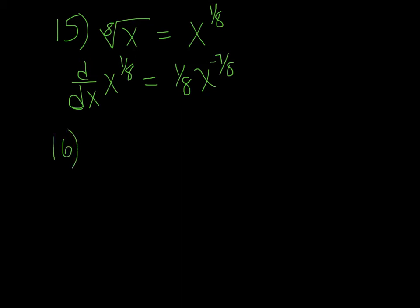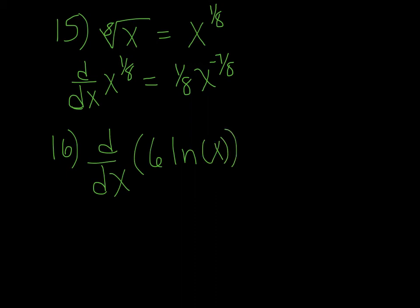Number 16: find d/dx of 6 ln of x. The derivative of ln of x is 1 over x, and the 6 just remains, so we get 6 over x.